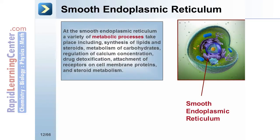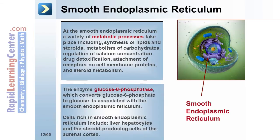At the smooth endoplasmic reticulum, a variety of metabolic processes take place. The enzyme glucose-6-phosphatase, which converts glucose-6-phosphate to glucose, is associated with the smooth endoplasmic reticulum. Cells rich in smooth ER include liver hepatocytes and the steroid-producing cells of the adrenal cortex.